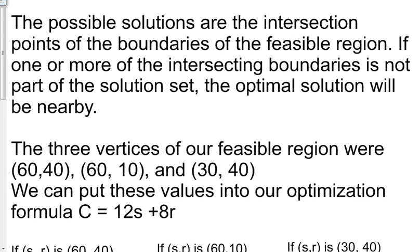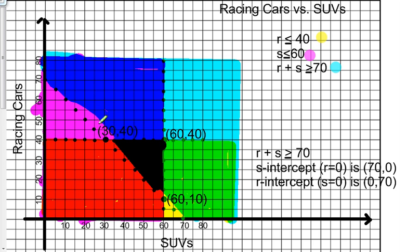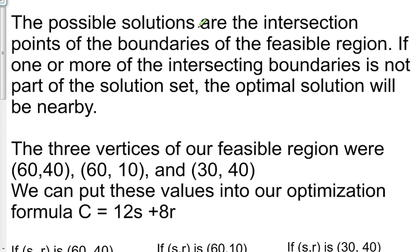The possible solutions are the intersection points of the boundaries of the feasible region. So the intersection points of the boundaries will be 30, 40, 60, 40, and 60, 10. If one or more of these intersecting boundaries is not part of the solution set, the optimal solution will be nearby.